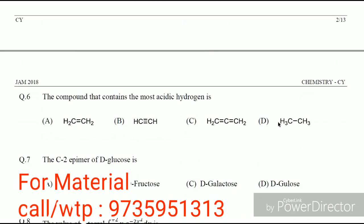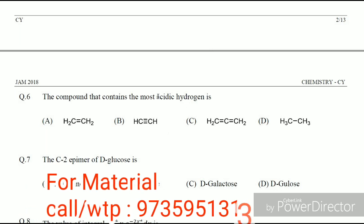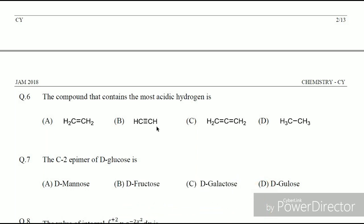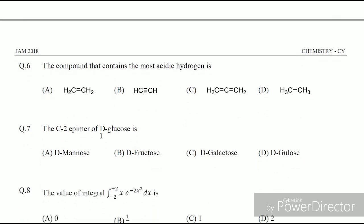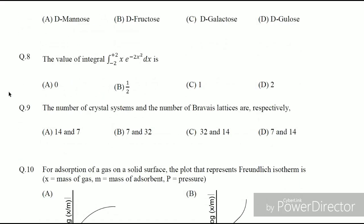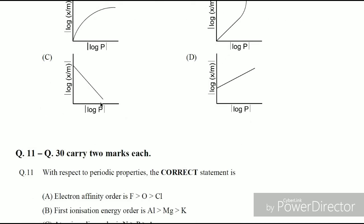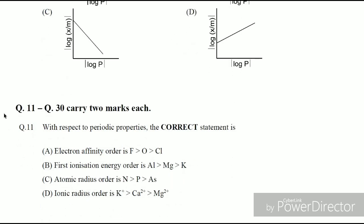The second question involves basic hybridization concepts and acidity comparison — also not coming directly from my material. The C2 epimer of D-glucose question I am also not considering. Question 7 is coming from my material. Question 9 is directly coming from my material. And question 10, which is from adsorption, is also coming directly from my material. So three questions from the first 10, that is three marks from Part A, Section 1.